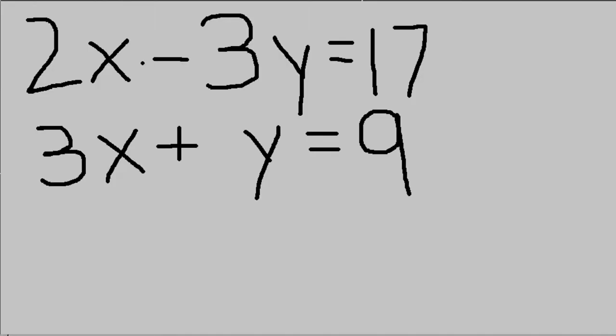The system we're going to solve today is 2x minus 3y equals 17 and 3x plus y equals 9.